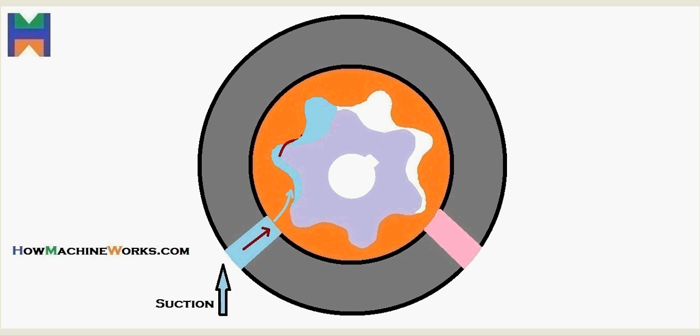We can see it once again. The oil has been trapped there, we create a pressure as the gear rotates, and it's pushed out through the delivery.